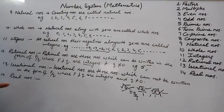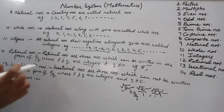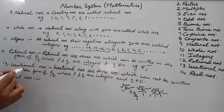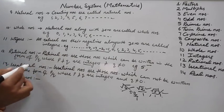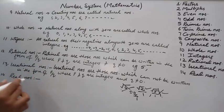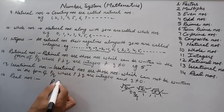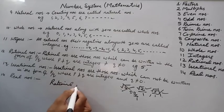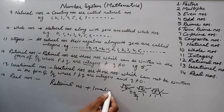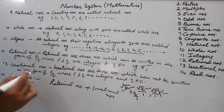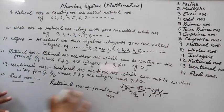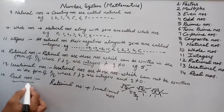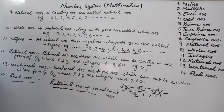If we combine rational numbers and irrational numbers, we get real numbers. So rational numbers plus irrational numbers form real numbers. All the numbers we have discussed here are all real numbers. Thanks for watching.